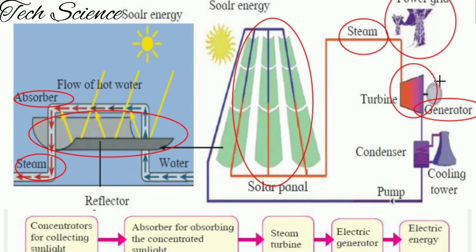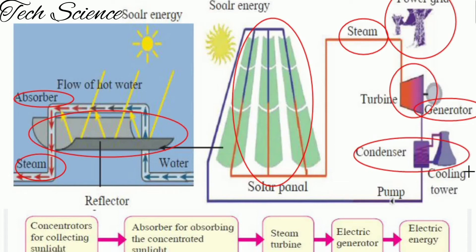Once the steam with high temperature and pressure is utilized for rotation of the turbine, the pressure and temperature get reduced. You have to convert it back into water, and for this reason we use the condenser and the cooling tower. The condenser converts the steam back into water by absorbing the heat, and this heat is absorbed by the water coming from the cooling tower.